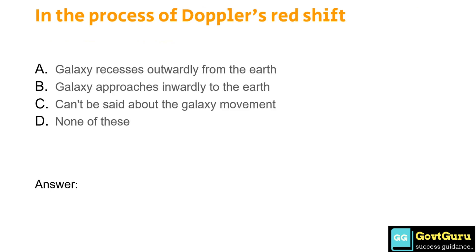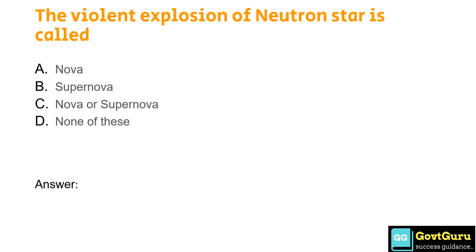In the process of Doppler's red shift: Option A: galaxy recedes outwardly from the Earth, Option B: galaxy approaches inwardly to the Earth, Option C: can't be said about the galaxy movement, Option D: none of these. The answer is Option A, galaxy recedes outwardly from the Earth. The violent explosion of a neutron star is called: Option A: Nova, Option B: Supernova, Option C: Nova or Supernova, Option D: none of these. The correct answer is Option C, Nova or Supernova.